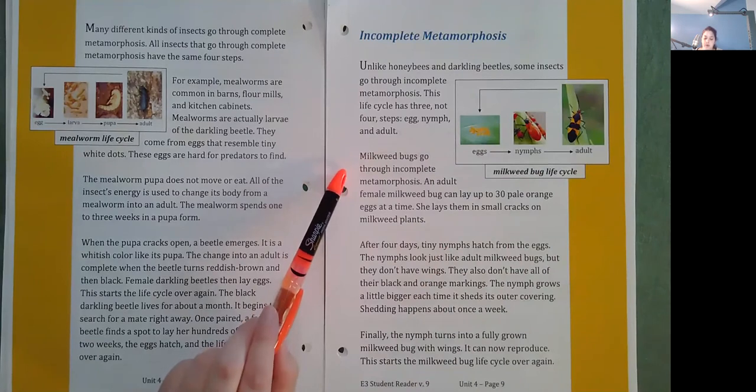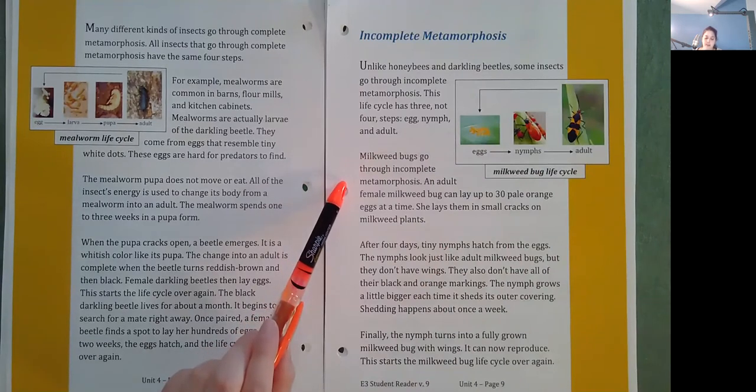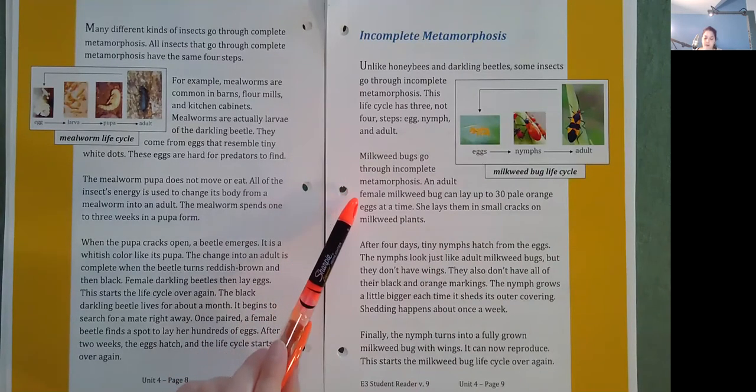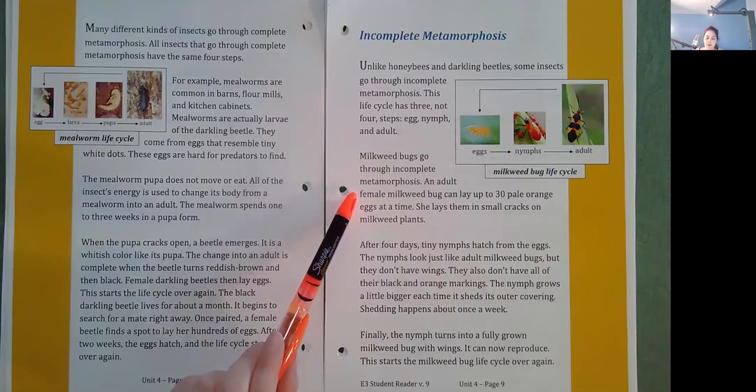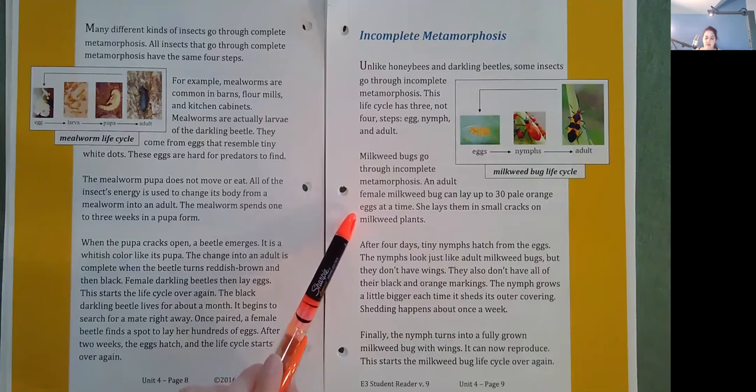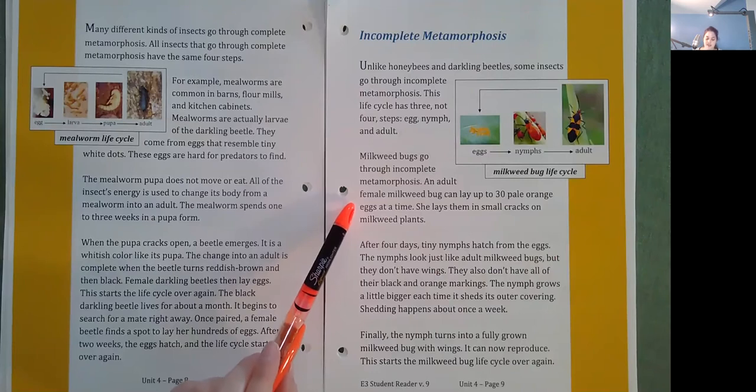Milkweed bugs go through incomplete metamorphosis. An adult female milkweed bug can lay up to 30 pale orange eggs at a time. She lays them in small cracks on the milkweed plants.